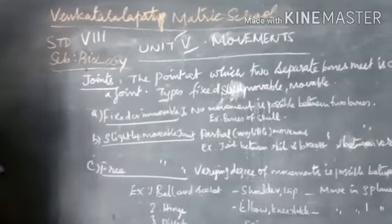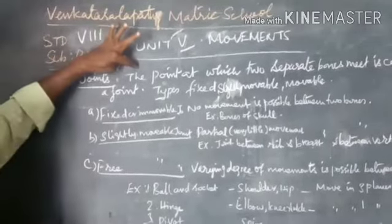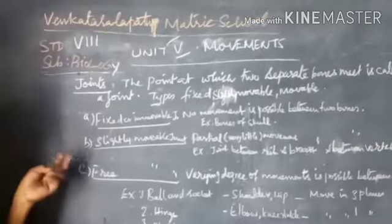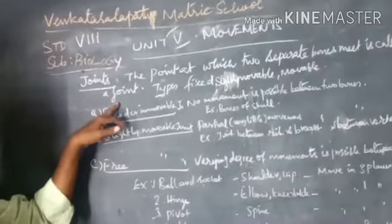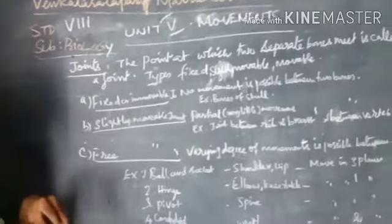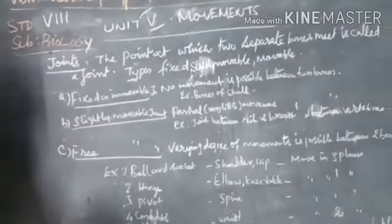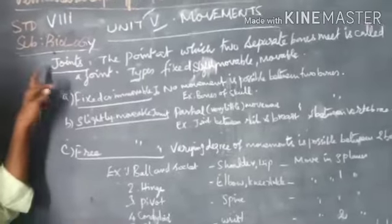What is the meaning of joint or define a joint? The point at which two separate bones meet is called as a joint. The point at which two separate bones meet, we are called as joints.